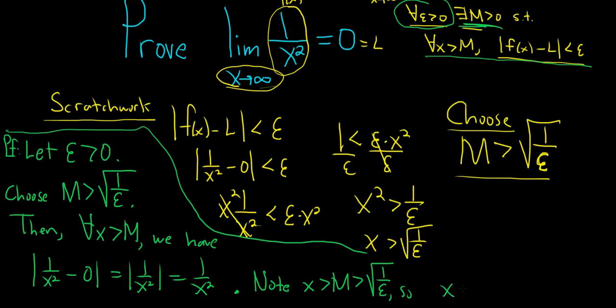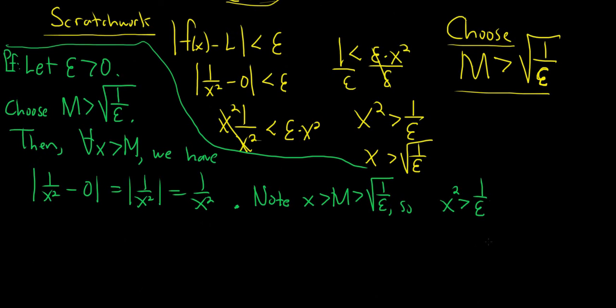So x is bigger than - x squared rather - is bigger than 1 over epsilon, squaring both. And that would mean that if you divide by x squared and multiply by epsilon at the same time,